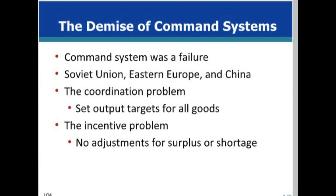Failures along the supply chain were common in command systems because one factory's output was another factory's input. A failure at any step along the way would cause a chain reaction, and this became more difficult as the economies grew. There were no indicators of success like profit or loss, no price signals to indicate more or less of a product was desired, resulting in surpluses and shortages.